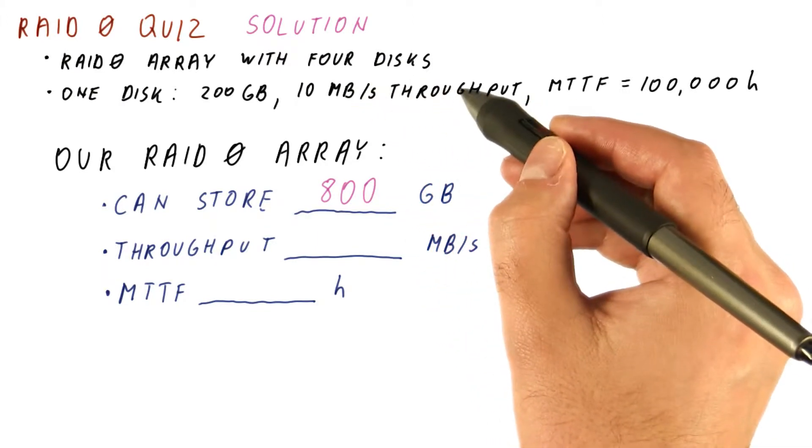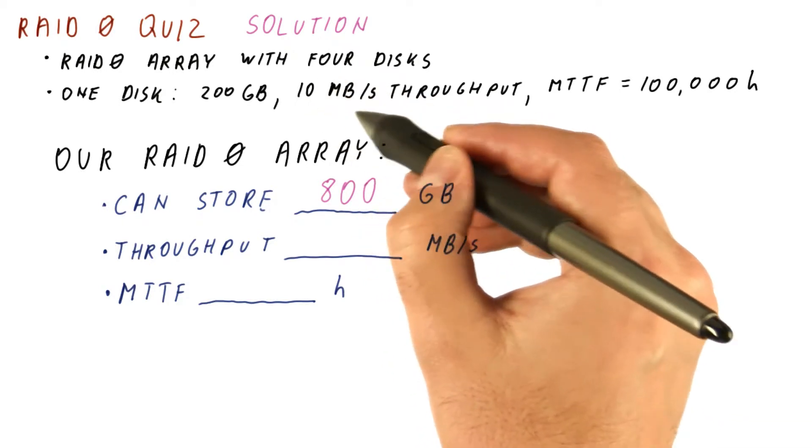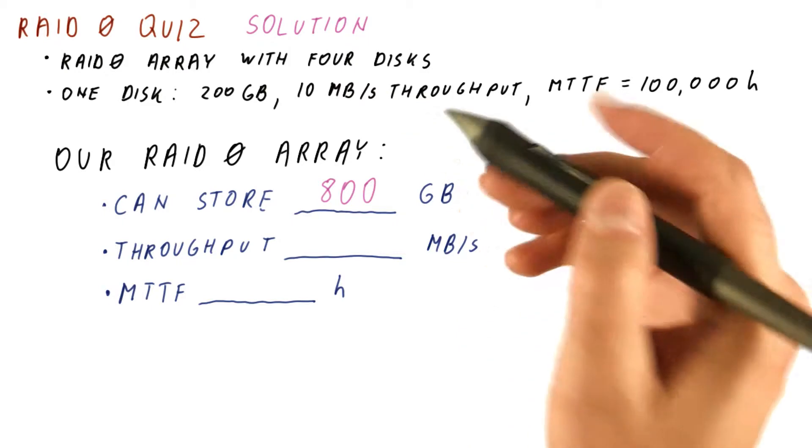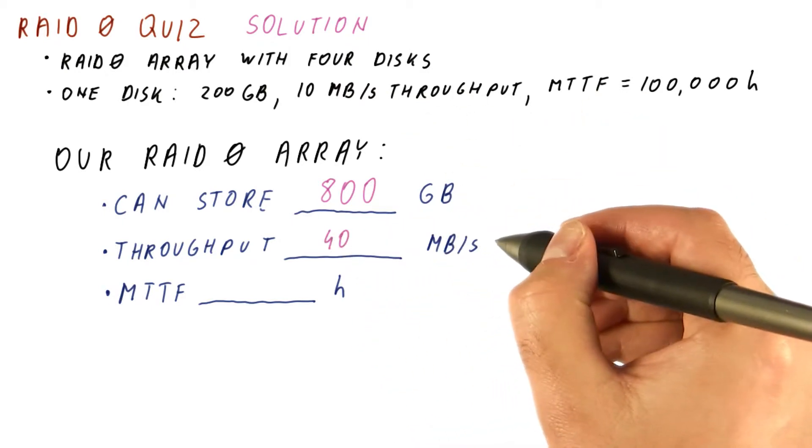If we spread the read and write load evenly across the disks, then one disk being able to support 10 megabytes per second and four disks being used in parallel like this gives us a throughput of 40 megabytes per second.